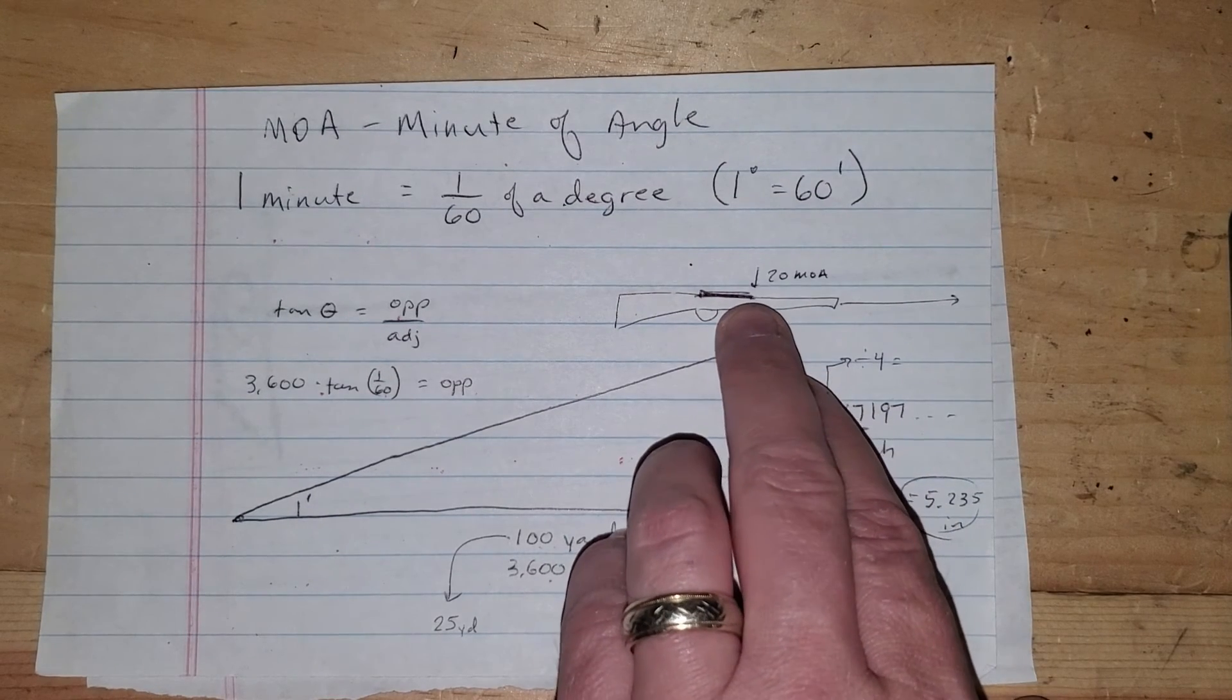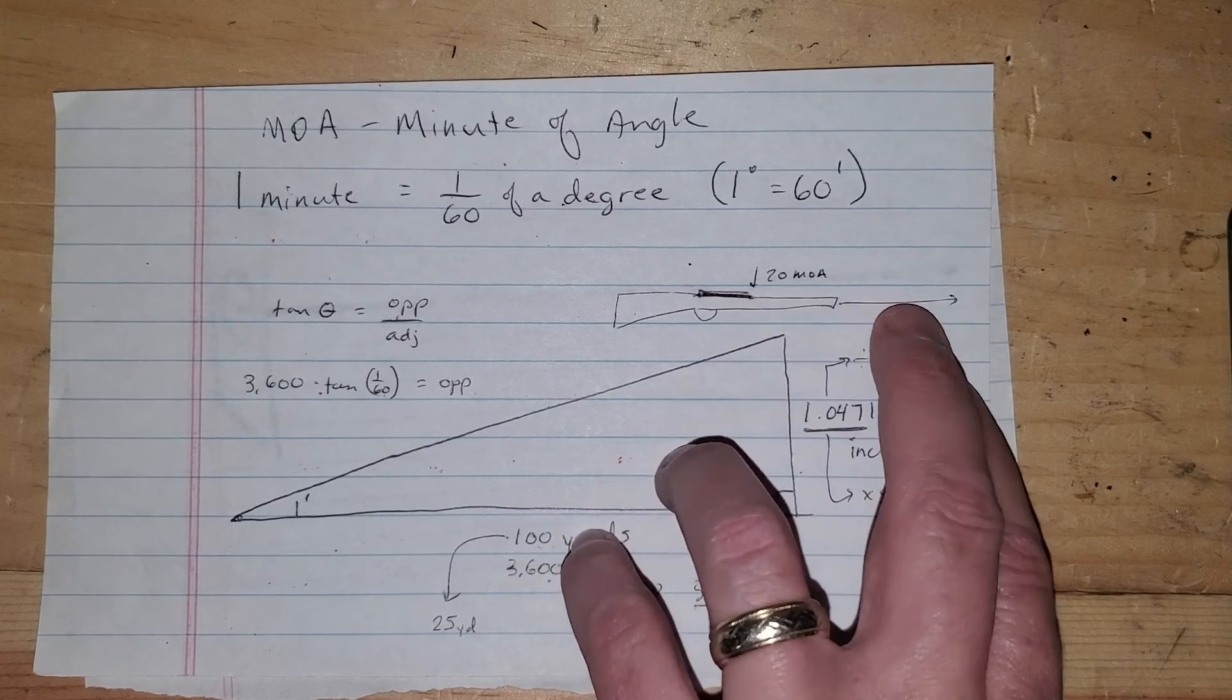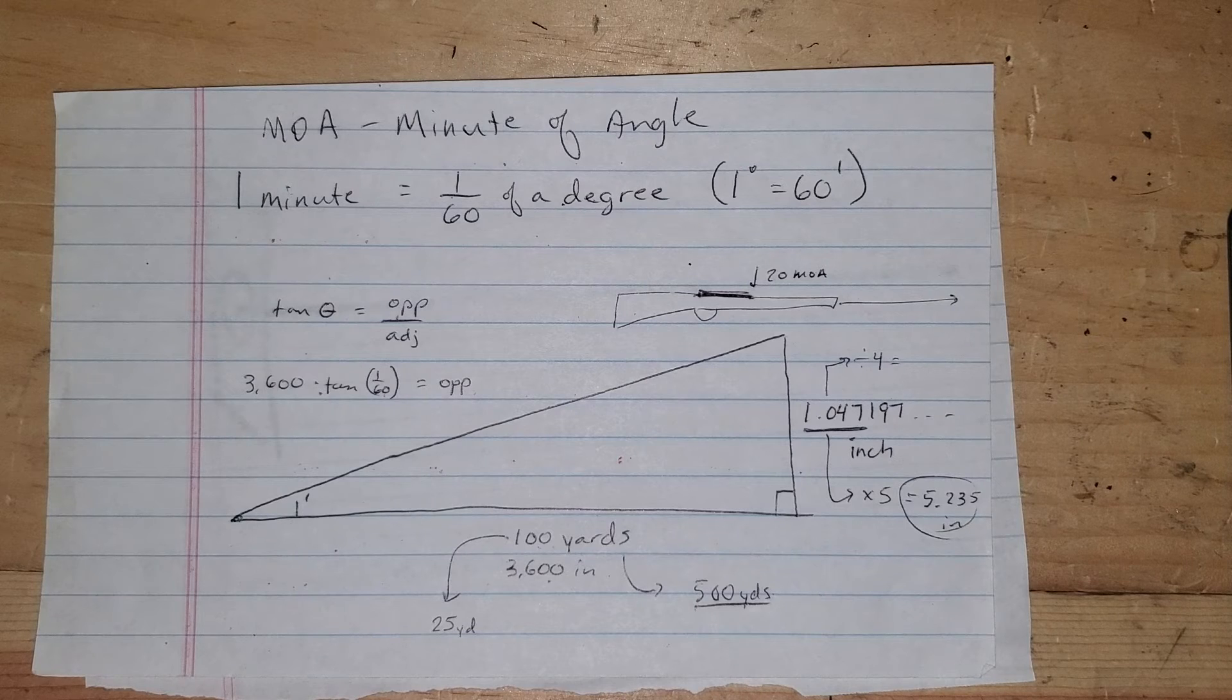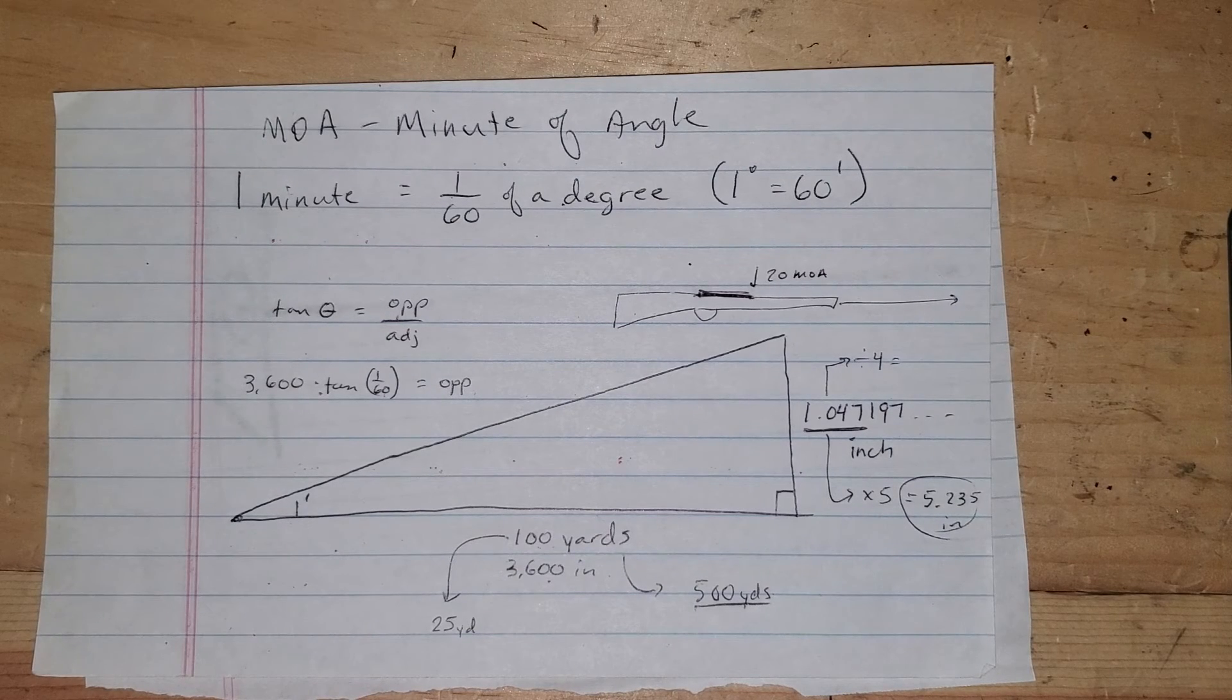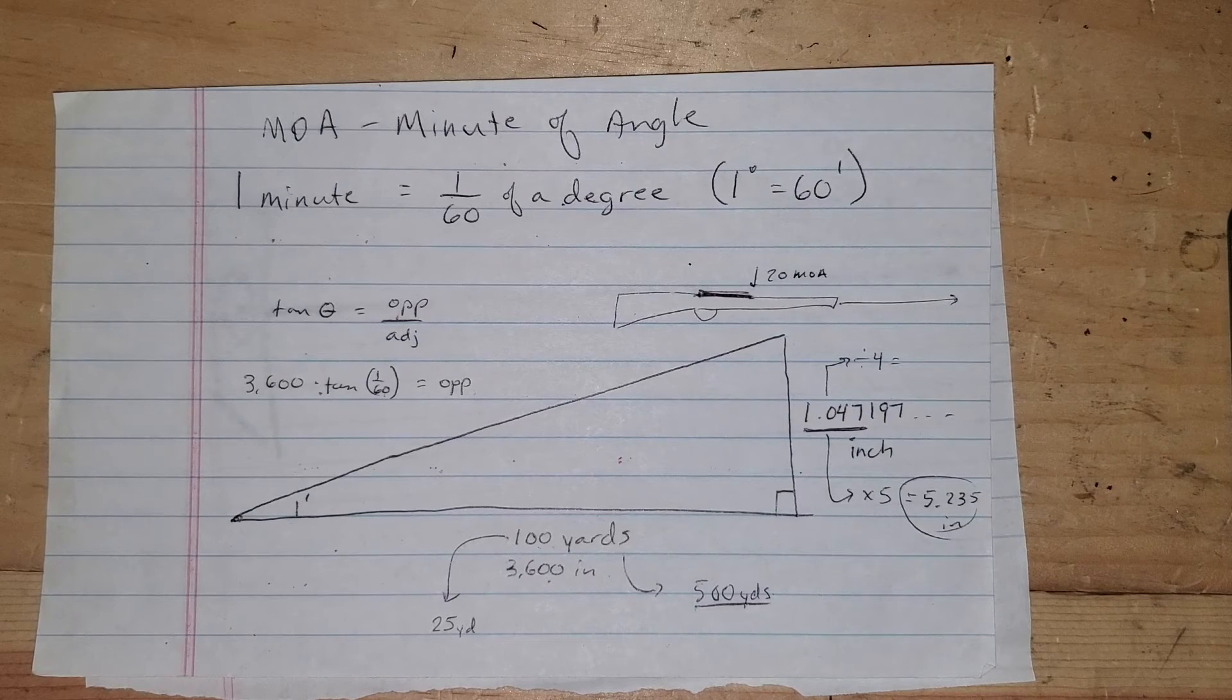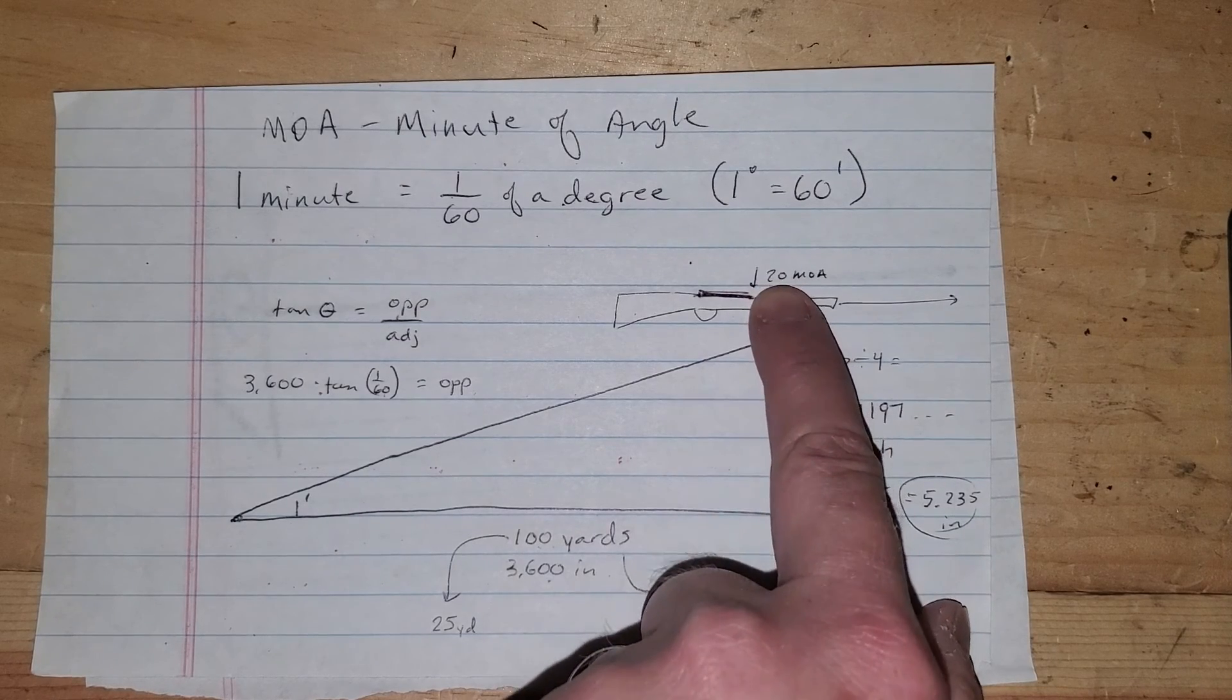What that allows is it allows you more vertical adjustment on your scope for long range shooting. So a friend of mine recently asked me, should I buy a 0 MOA or a 20 MOA rail to put on my rifle? The longest shot he is ever going to take is 200 yards.